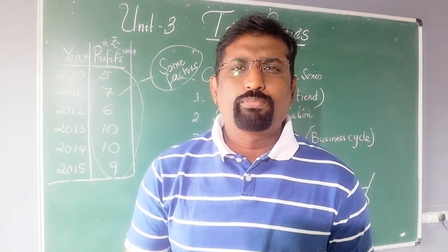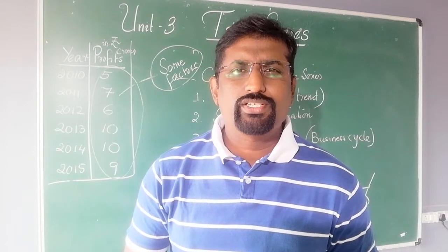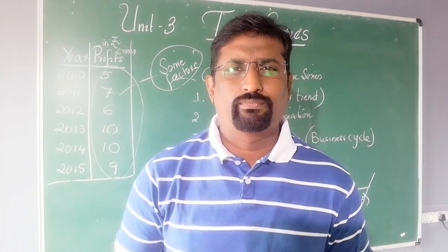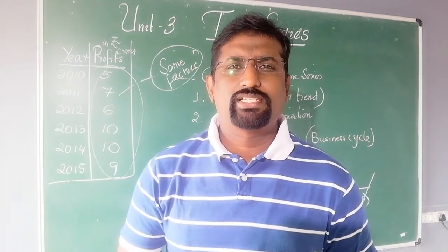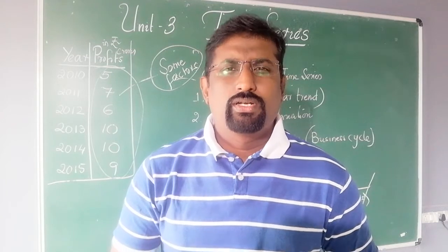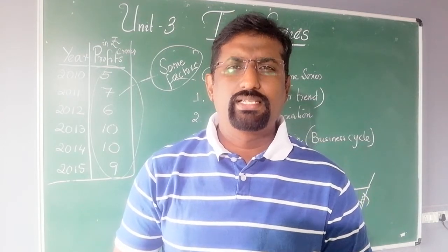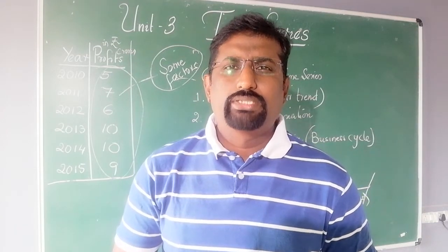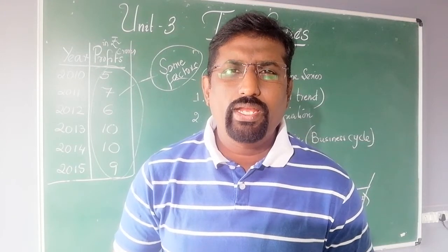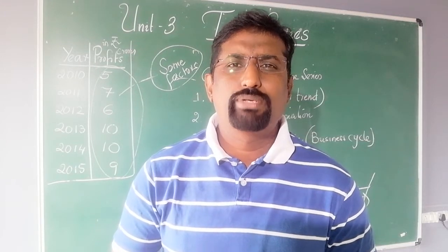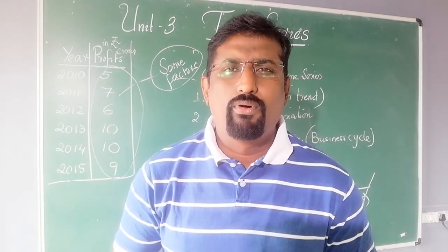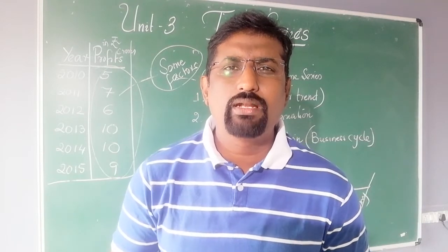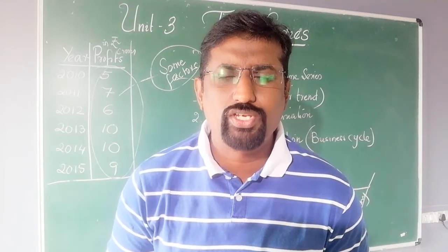The components of time series are four. Number one is called as trend. Number two is called as seasonal variation. Number three is called as cyclical variation or a business cycle. And number four is called irregular variation or random fluctuation.